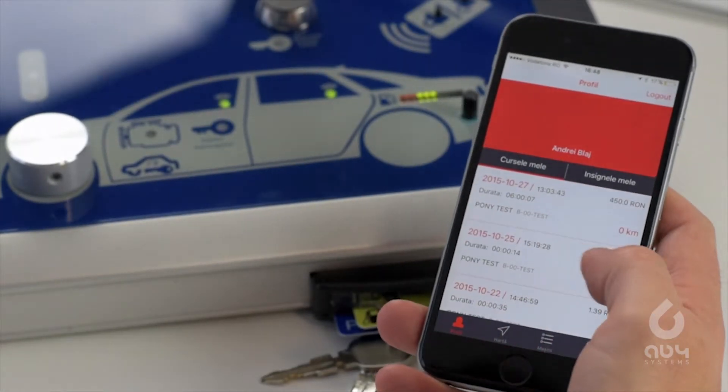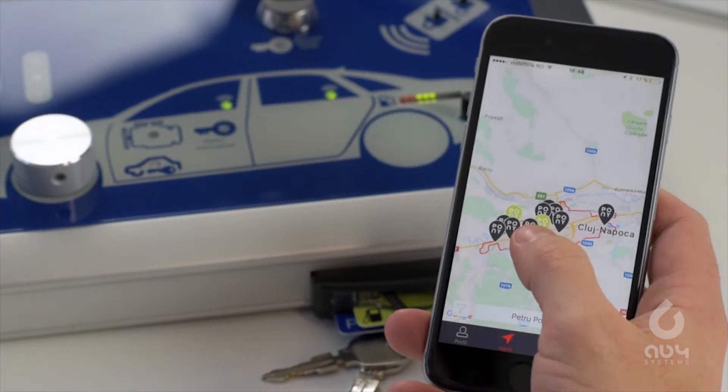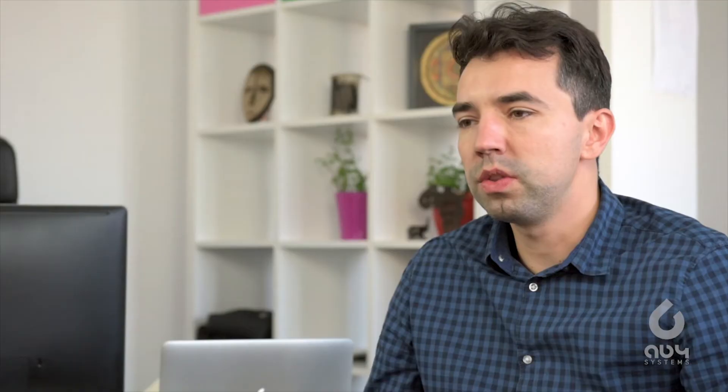GetPony uses the smartphone application as the main interface for their users. The users can check for the available cars in the system and find out which one is closest to them.